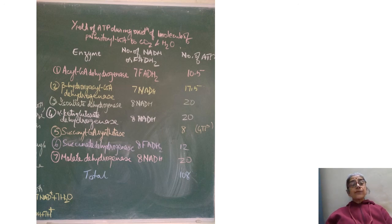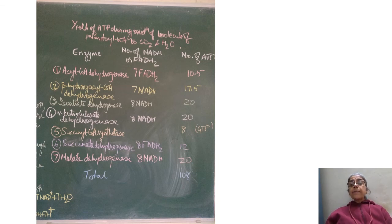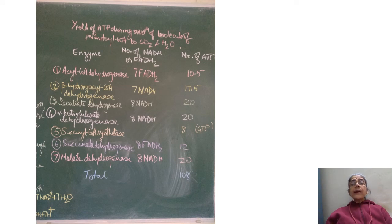From the TCA cycle enzymes: isocitrate dehydrogenase produces 8 NADH, giving 20 ATP; alpha-ketoglutarate dehydrogenase produces 8 NADH, giving 20 ATP; succinyl-CoA synthetase forms 8 GTP, equivalent to 8 ATP; succinate dehydrogenase produces 8 FADH2, giving 12 ATP; and malate dehydrogenase produces 8 NADH, giving 20 ATP. In total, 108 molecules of ATP are formed by the oxidation of one molecule of palmitoyl-CoA.